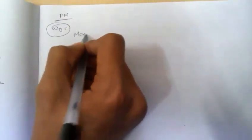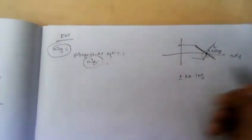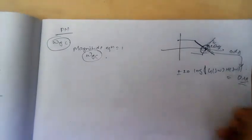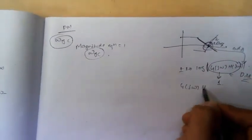In order to calculate phase margin, you must first know Omega GC. Omega GC is the value at which the magnitude will be 1. If you equate the magnitude equation to 1, the corresponding Omega value will be Omega GC. If you remember Bode plot, this Bode plot intersects the 0 dB line at Omega GC. At this point, minus 20 log of magnitude of G(jω)H(jω) is 0, which means the magnitude of G(jω)H(jω) is 1.